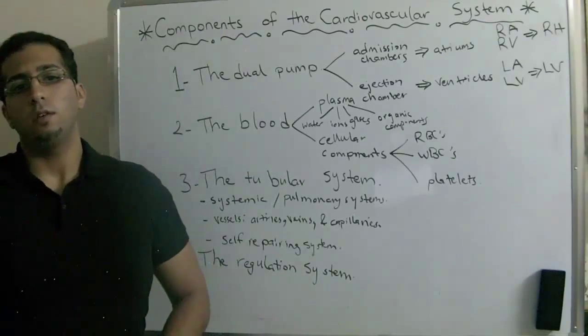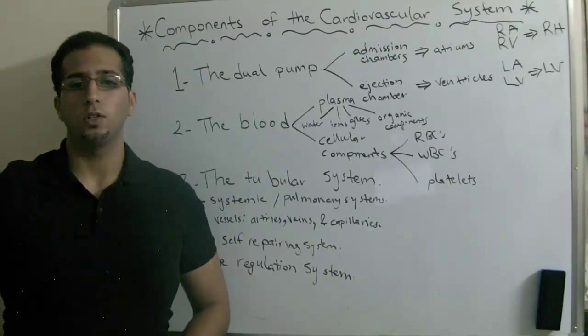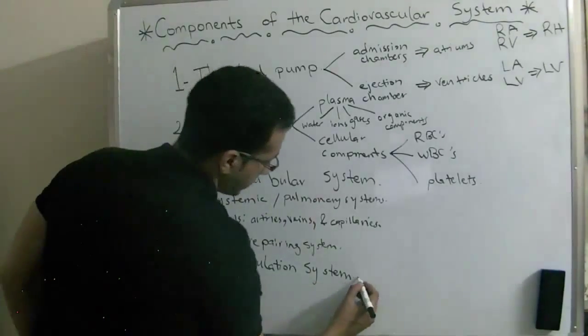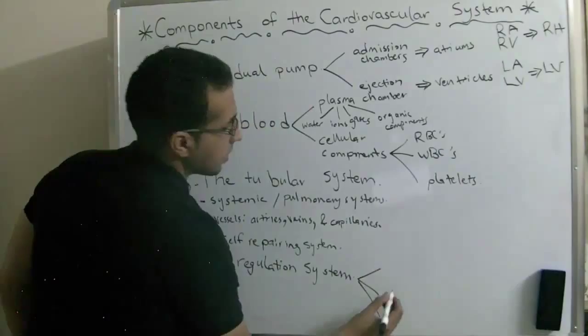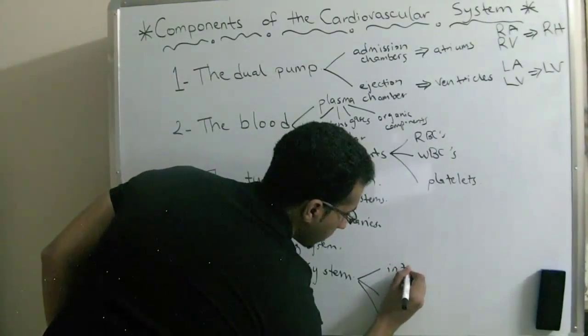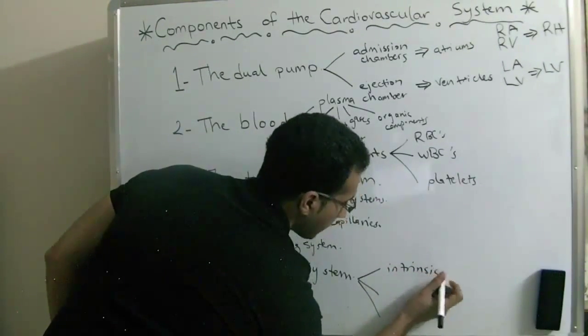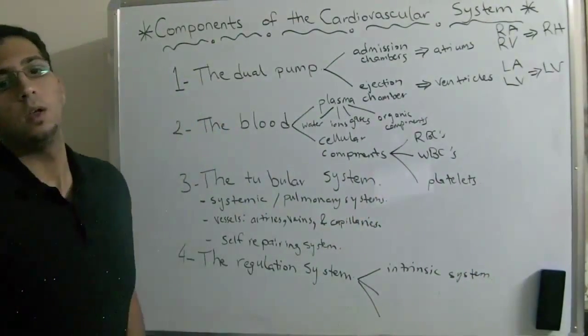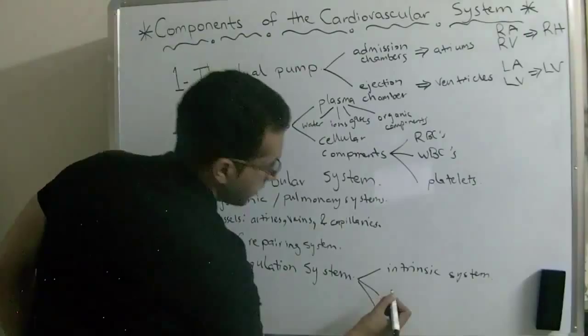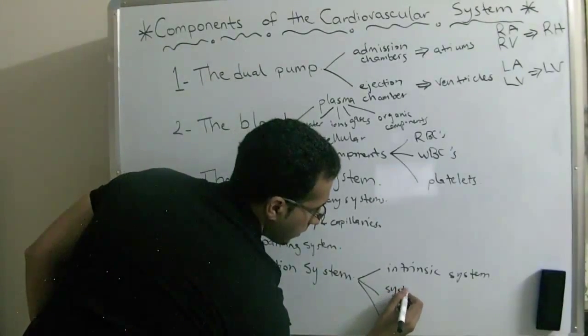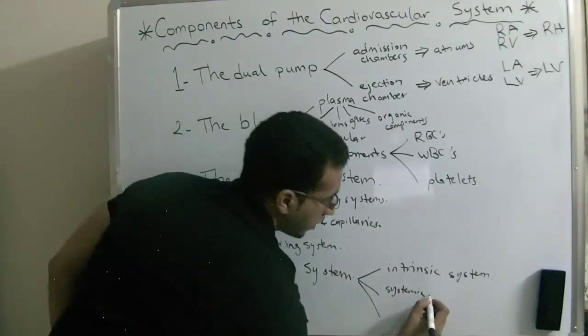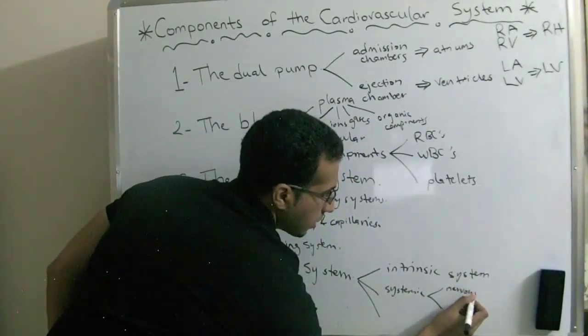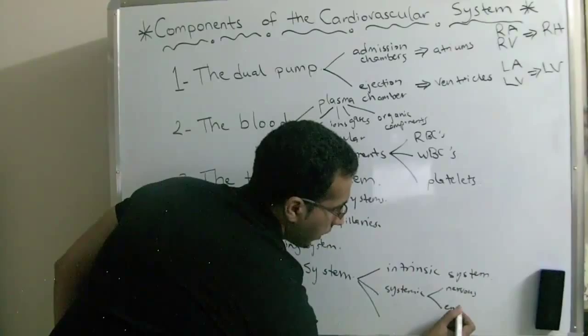For the regulation of the cardiovascular system, it's divided into three parts. The intrinsic system, the systemic system which is divided into nervous and endocrine.